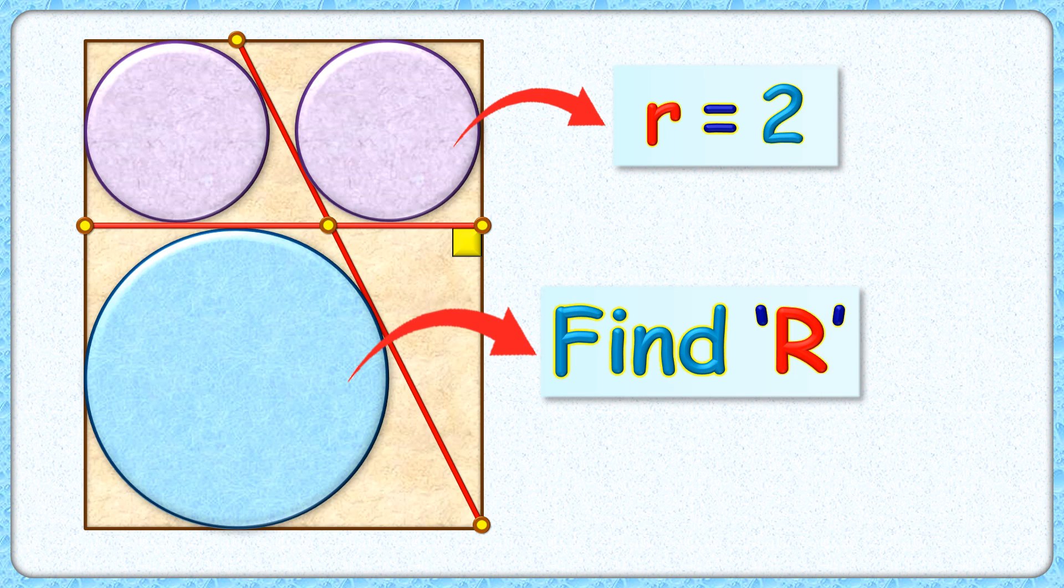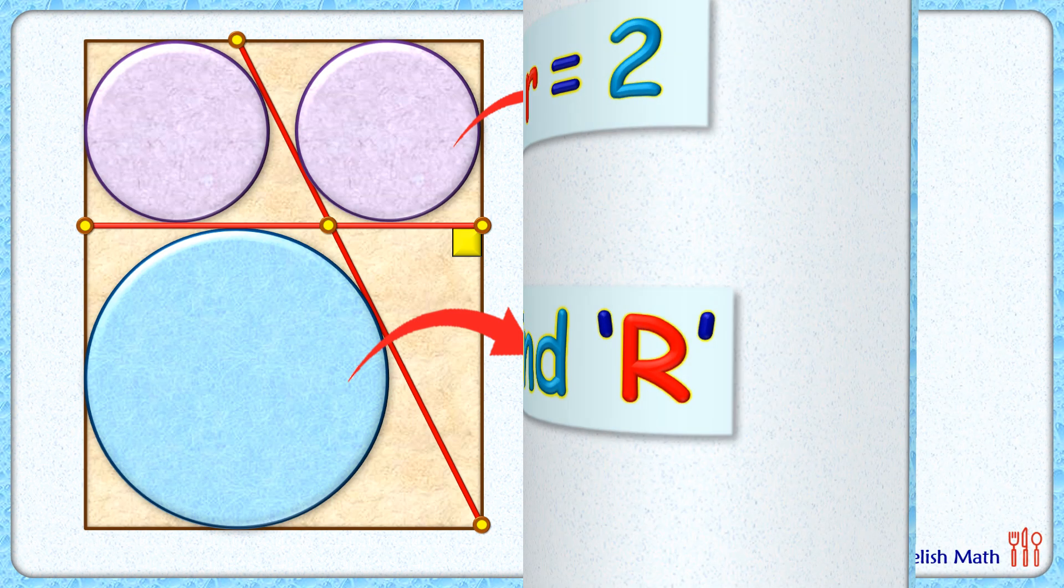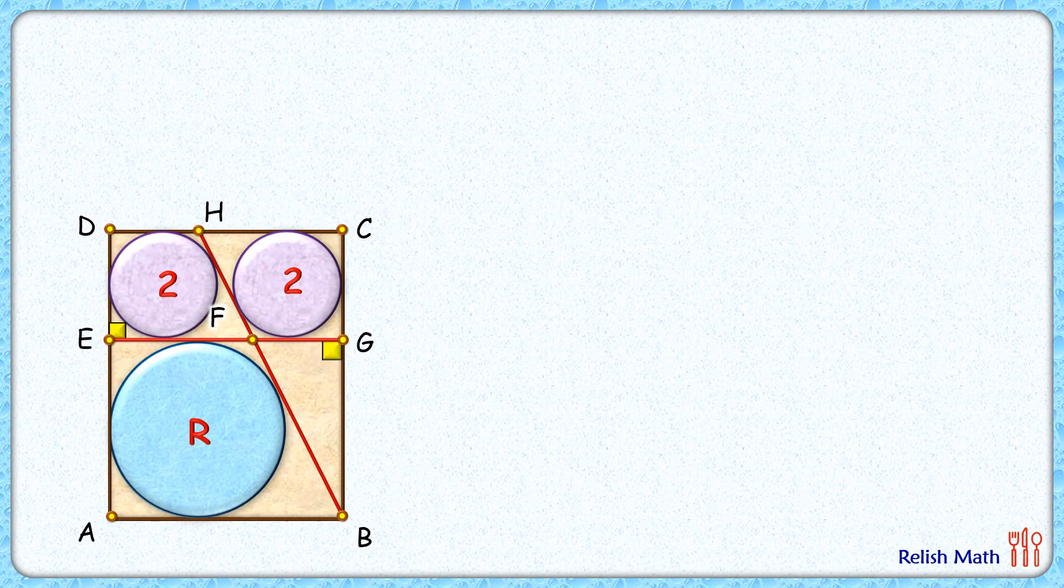Wow, this question looks amazing! Given to us is a rectangle with three circles inside it. The radius of these two purple circles is 2 centimeters each. These two line segments are tangent to these circles. The exciting part is, with this given data, we have to find the radius of this blue circle.